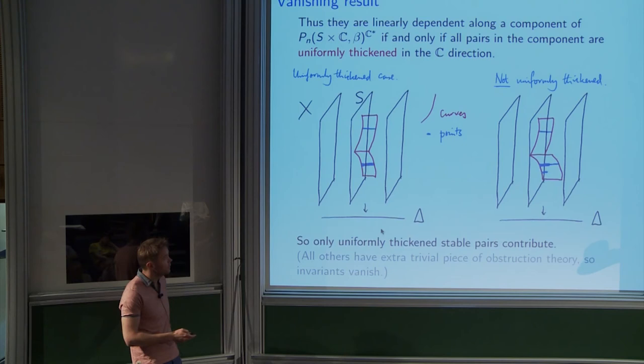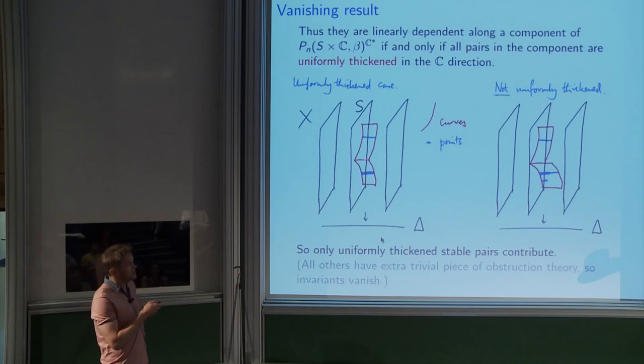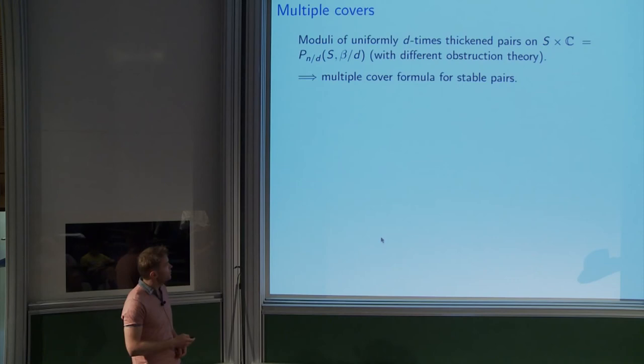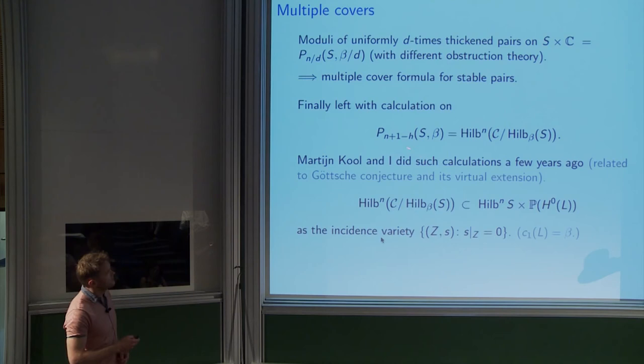So you get a vanishing theorem: none of the non-uniformly thickened guys contribute — only the uniformly thickened pairs contribute. This is a multiple cover formula in stable pairs, and it's much simpler because the moduli space of these is just the moduli space of stable pairs on the original K3 surface — the thickening bit has no information, it's just one integer. So we reduce to a calculation on the K3 surface with no thickenings at all. This gives us a multiple cover formula and shows the stable pair theory simplifies greatly.